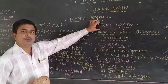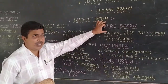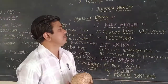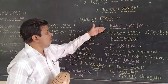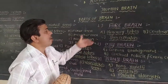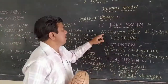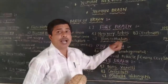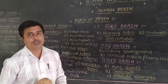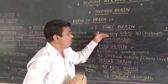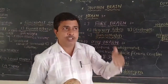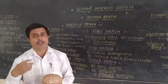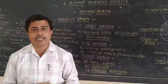The forebrain is the most important and the largest part of the brain, occupying much of its volume. It is divided into three parts: the olfactory lobes, the cerebrum, and the diencephalon. The olfactory lobes are not well developed in human beings, but they are well developed in other mammals like dogs.